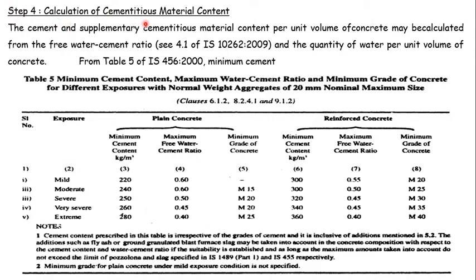Step 4 is calculation of cementitious material. The cement and supplementary cementitious material content per unit volume of concrete may be calculated from the free water-to-cement ratio per IS 10262-2009 clause 4.1 and the quantity of water per unit volume of concrete. This is the same table from IS 456-2000 repeated, giving the minimum cement content. Using the maximum free water-cement ratio and minimum cement content from the table, we can find the cementitious material content.